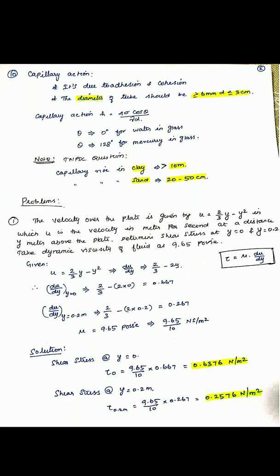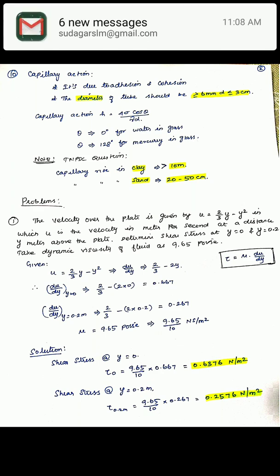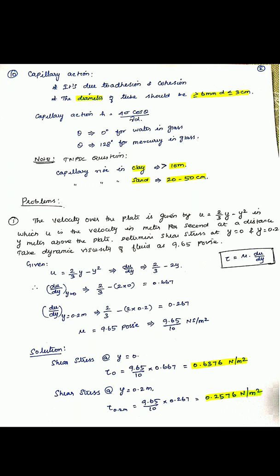Capillary action is due to both adhesion and cohesion. The diameter of the capillary tube should be less than 3 mm. The capillary rise h equals 4 sigma cos(alpha) divided by gamma into d. The contact angle theta is 0 degrees for water in glass and 128 degrees for mercury in glass. Capillary rise in clay is greater than 10 meters; in stone, it is 20 to 50 centimeters.